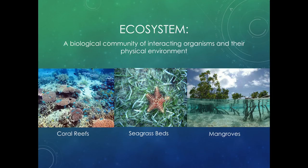When we narrow down and talk about ecosystems, an ecosystem is a biological community of interacting organisms and their physical environment. In the example of the ocean biome, our main ecosystems here in the Florida Keys are coral reefs, seagrass beds, and mangroves — those are our three main ecosystems. Obviously it depends on where you are in the world; a pond, a lake, or a river is also an ecosystem. It's a smaller category within that big umbrella term.